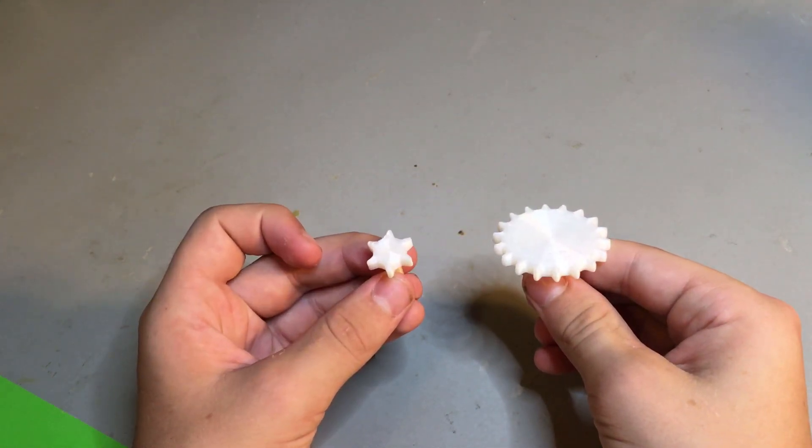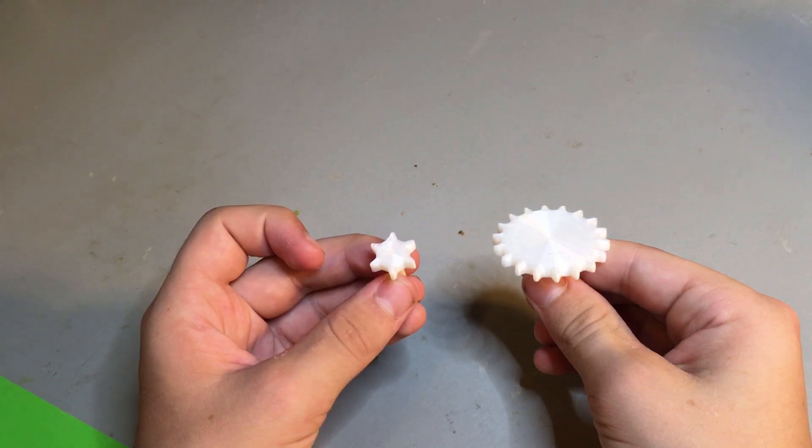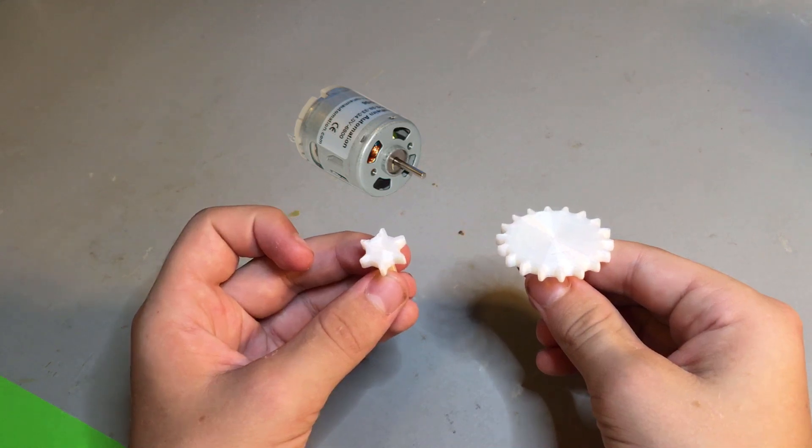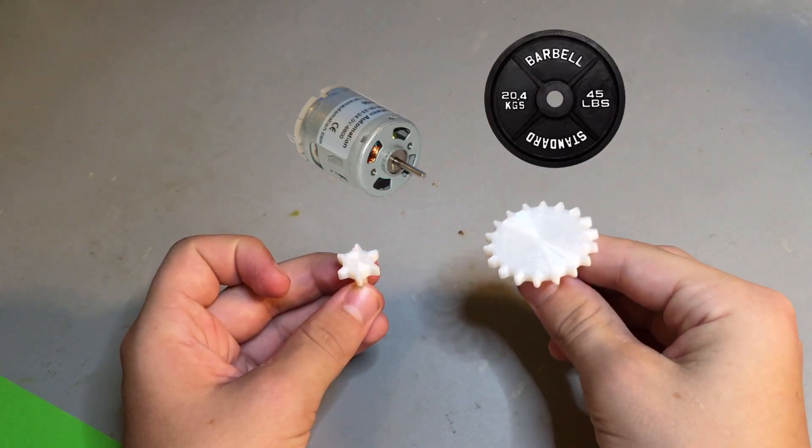Because the first gear has less teeth, I normally call this a small gear ratio. If I have my motor on the small gear, but my load or weight on the larger gear,